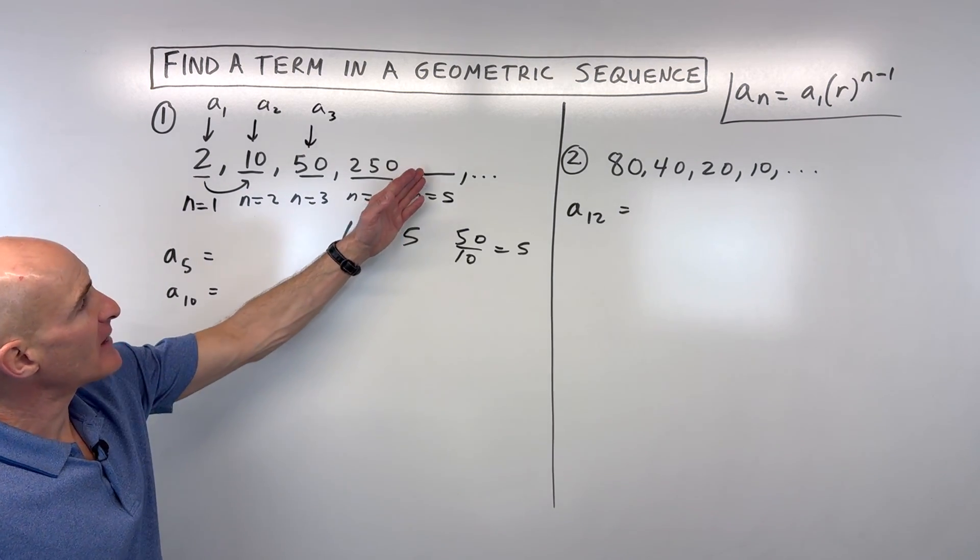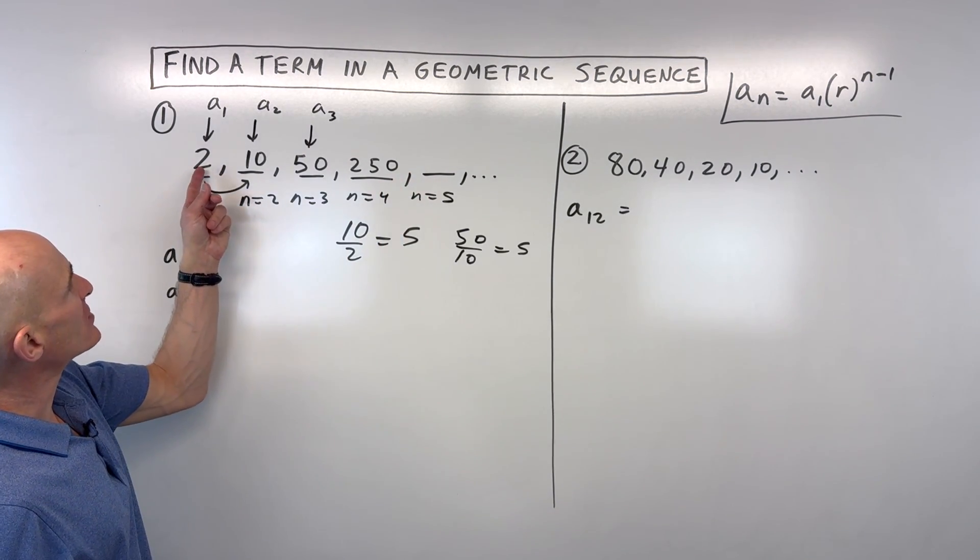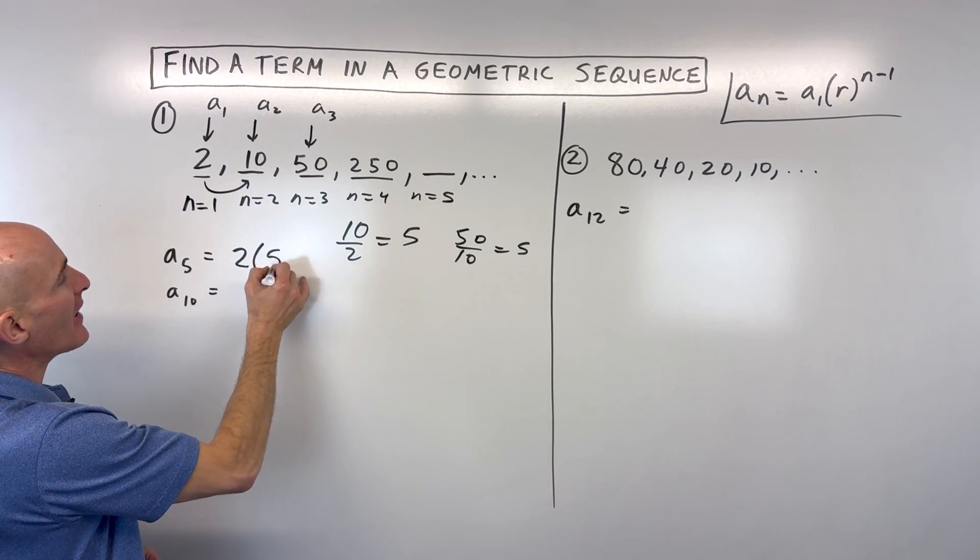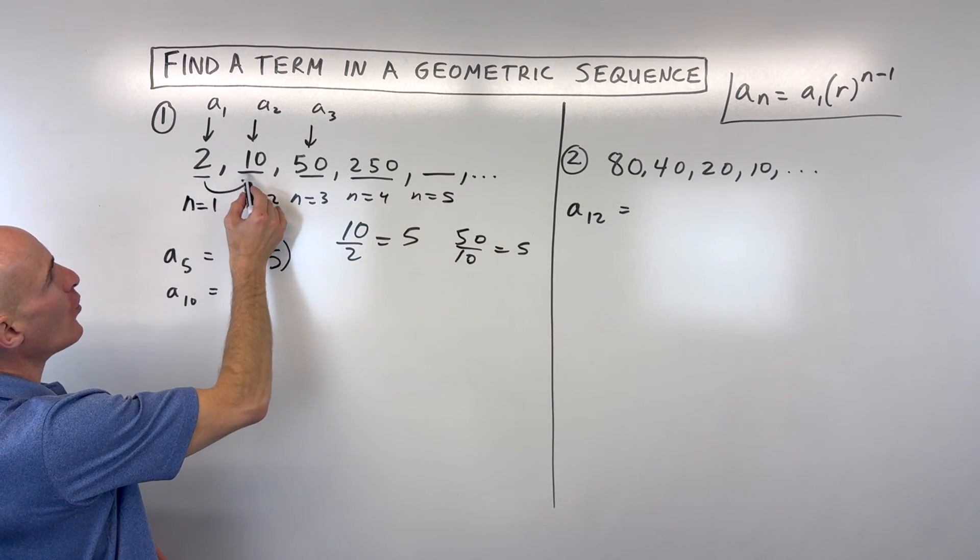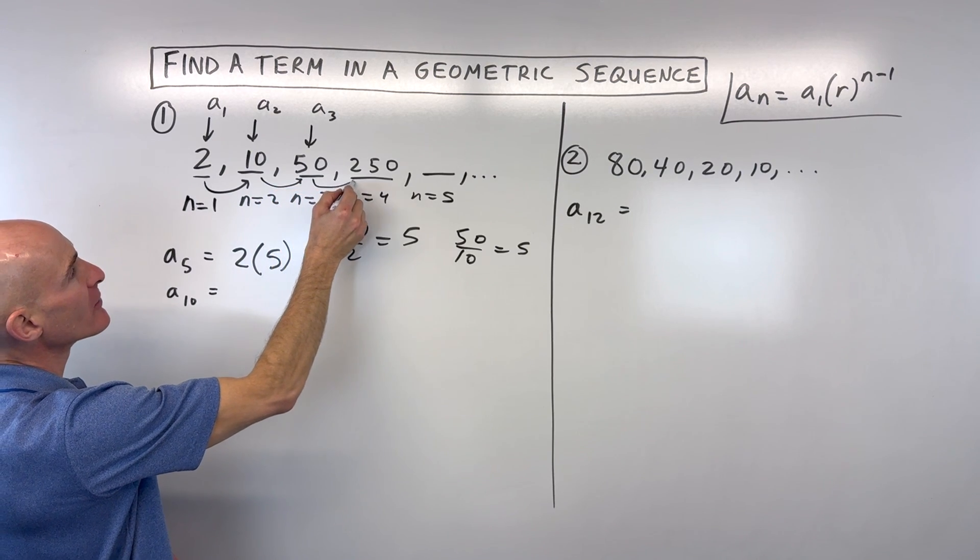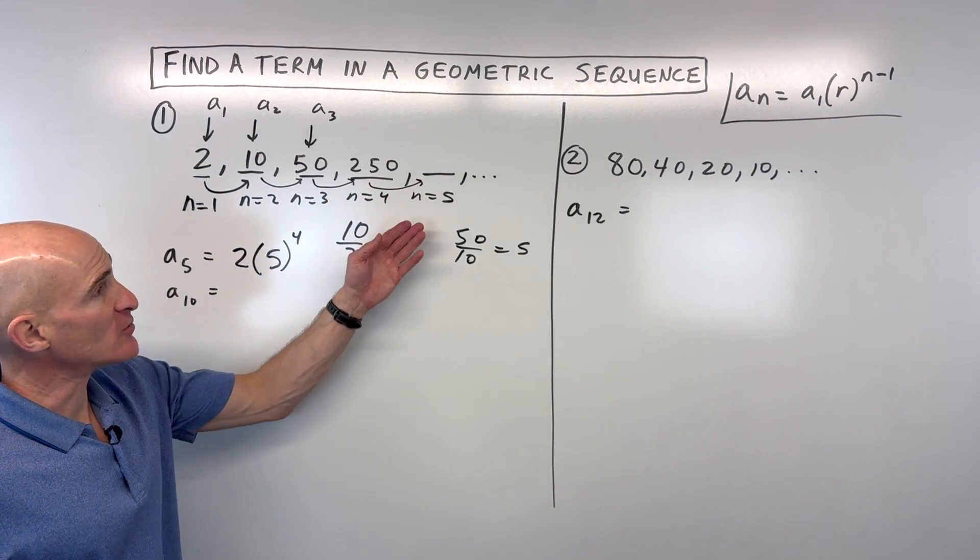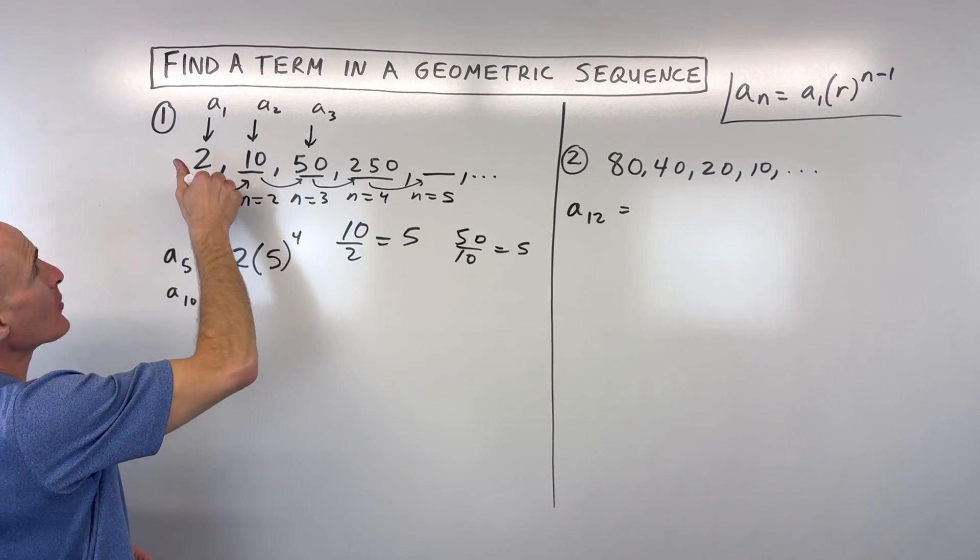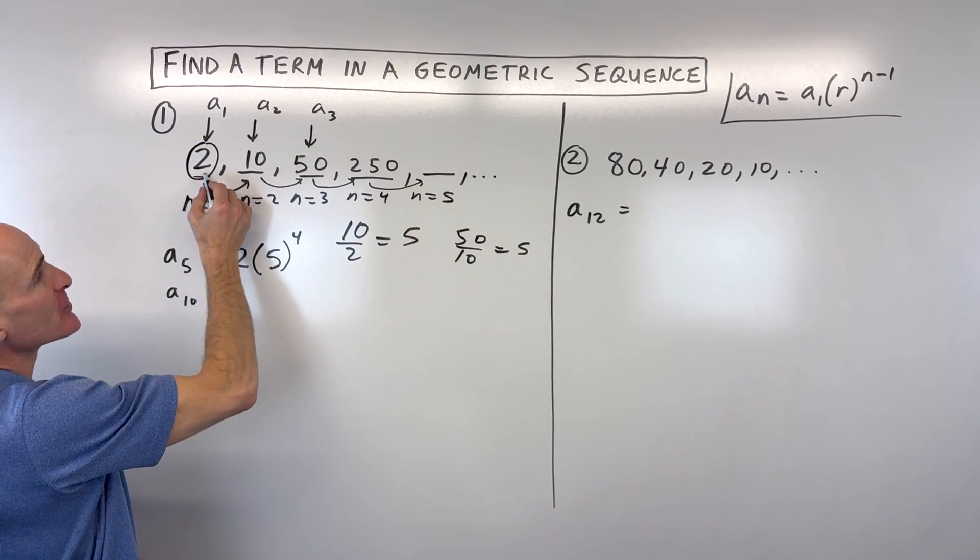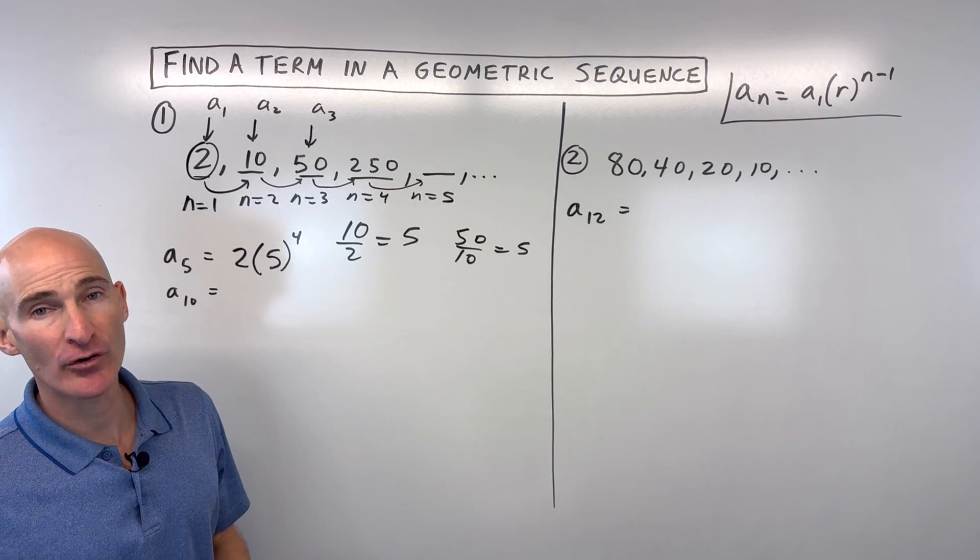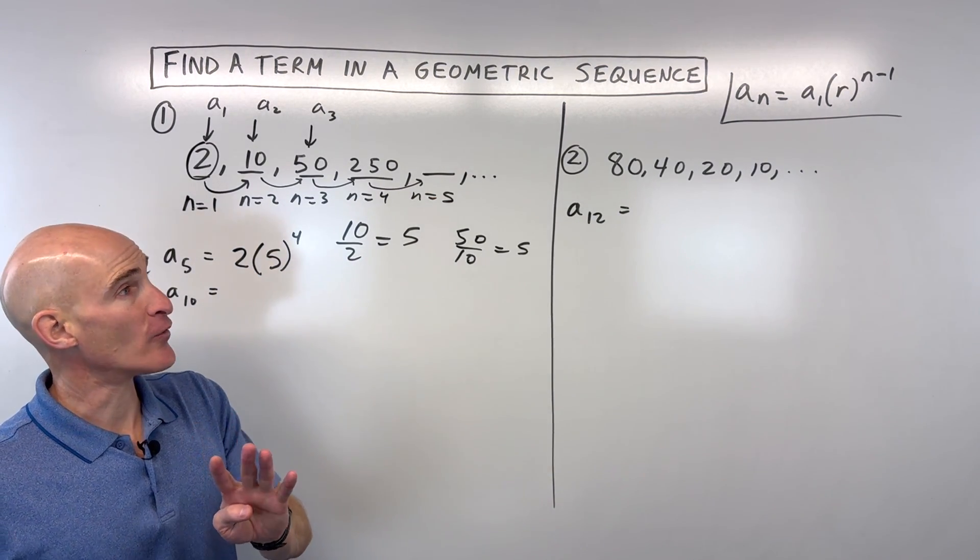So what we're doing here, if we want to find the fifth term, is we're starting at 2, right? And we're multiplying by 5 how many times? Once? Twice? Three times? Four times? Now, why not five times? We're on the fifth term. Well, that's because we're already starting at 2. We're already at that first term. So to get to the fifth term, we only have to multiply by the ratio one less time. So four times.